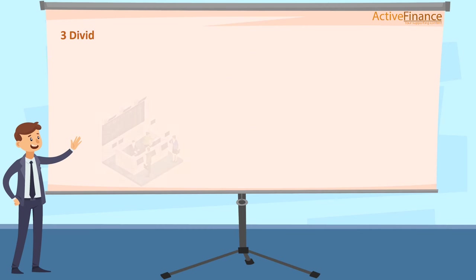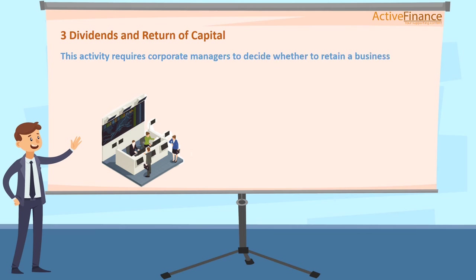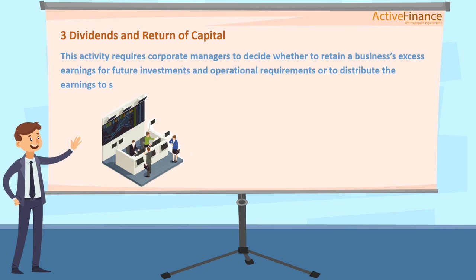3. Dividends and Return of Capital: This activity requires corporate managers to decide whether to retain a business's excess earnings for future investments and operational requirements, or to distribute the earnings to shareholders in the form of dividends or share buybacks.